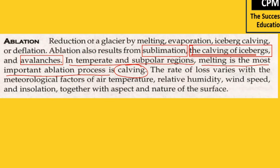So ablation is the reduction of a glacier by melting, evaporation, iceberg calving, or deflation. Now the question can be: how is ablation taking place in the colder region where ice exists? Is the rate of loss the same everywhere? No, it is not the same everywhere — it varies depending on meteorological factors.